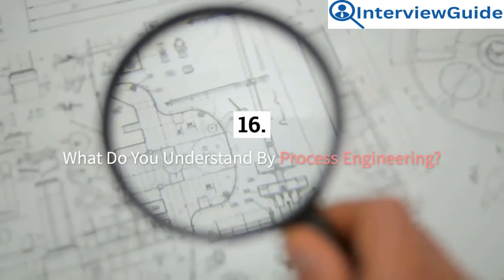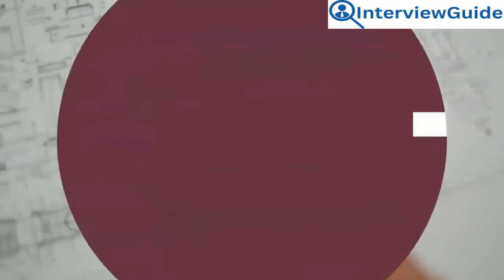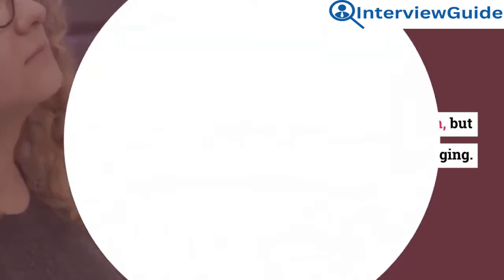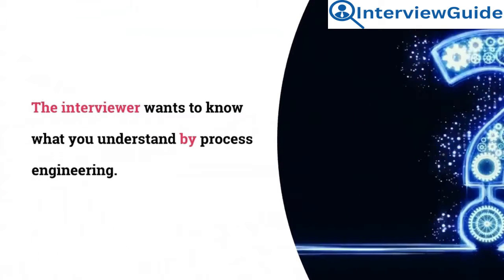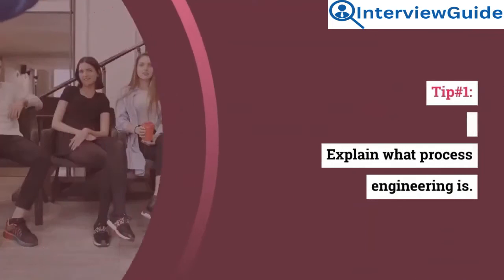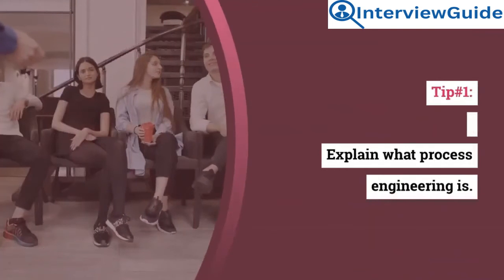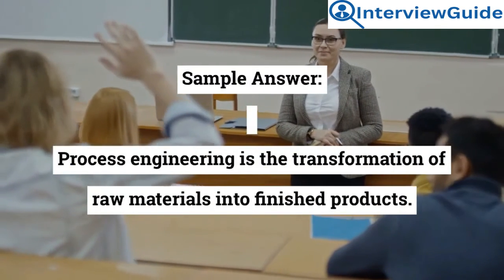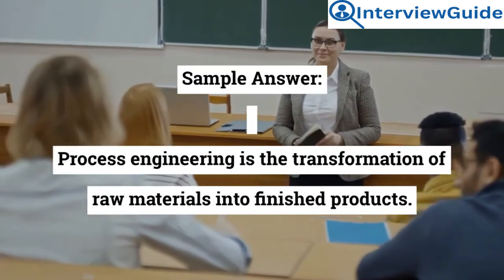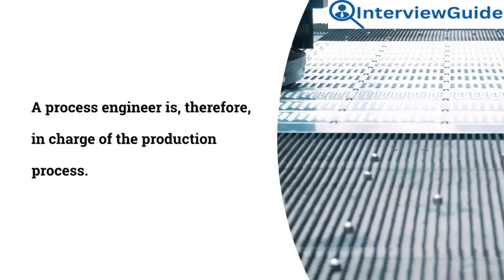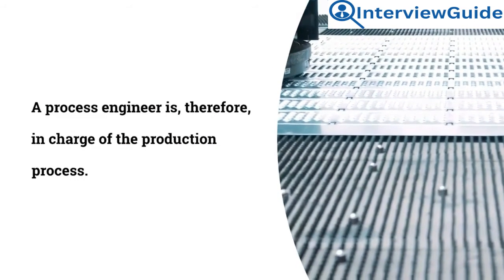Question 16: What do you understand by process engineering? This is a simple question, but it can be quite challenging. The interviewer wants to know what you understand by process engineering. Tip 1: explain what process engineering is. Tip 2: be precise. Sample answer: process engineering is the transformation of raw materials into finished products. A process engineer is therefore in charge of the production process.